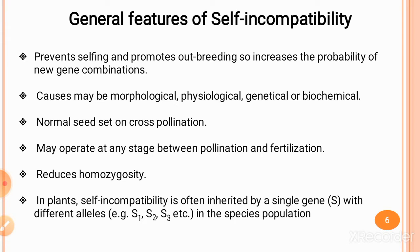Self-incompatible species do not produce seeds on self-pollination but lead to normal seed setting on cross-pollination. If you perform selfing, you will not get seeds, but with cross-pollination, seeds are produced. This maintains a high degree of heterozygosity in a species due to outbreeding, while at the same time reducing homozygosity due to the elimination of selfing.